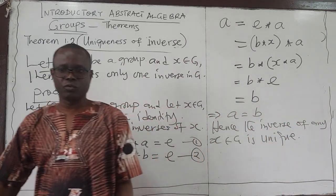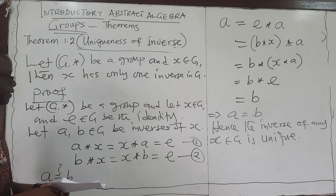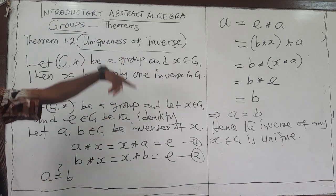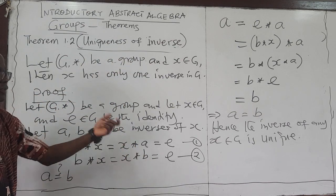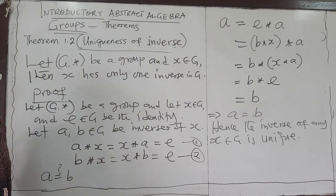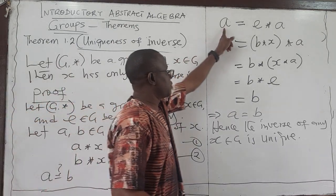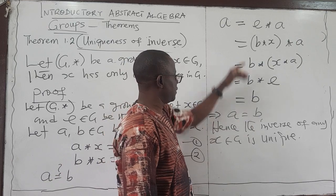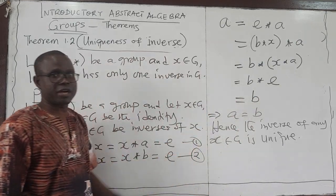There is only one inverse for any X in G. Also, there are various ways to write this proof using different combinations. The idea is the same — you could start with B instead of A, follow the same procedure, and end up showing B equals A. You could try that as an exercise.